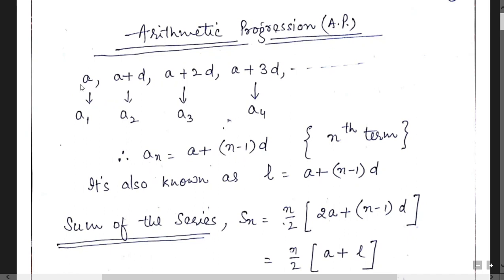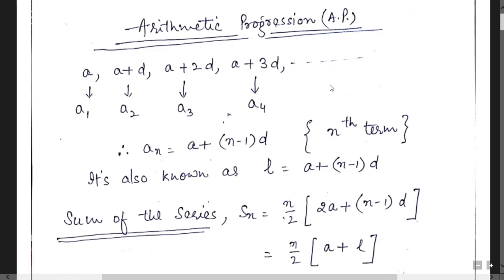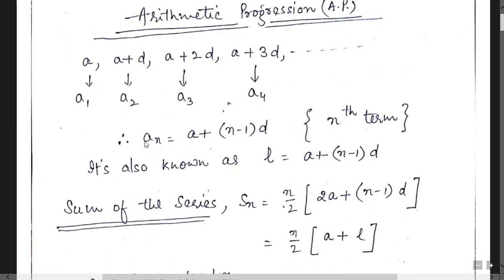In this series, the first term a1 is 'a', the second term is a plus d, the third term is a plus 2d, and the fourth term is a plus 3d. The difference between all the consecutive terms is d. So we can write the nth term as a plus (n minus 1) into d, because if the term is the fourth, there are 3 d's; if the term is 3rd, there are 2 d's. For the nth term, we write n minus 1 into d.